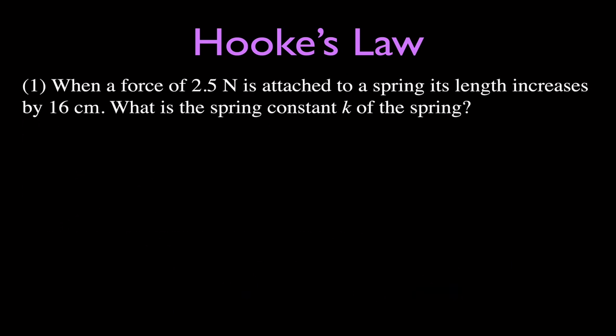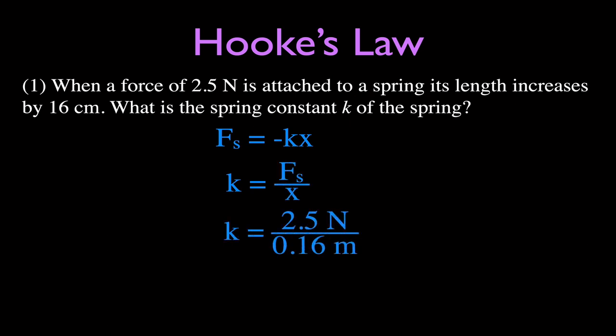Example number one: we have a force of 2.5 newtons applied to a spring and we get a change in length of 16 centimeters. We want to find the spring constant k. Using Hooke's Law and solving for k — that's force divided by change in length — we get 2.5 newtons divided by 0.16 meters, giving a spring constant of 15.6 newtons per meter.